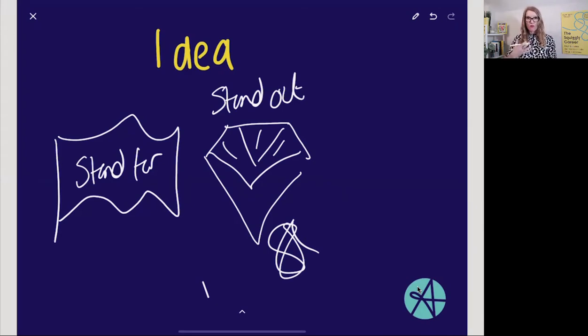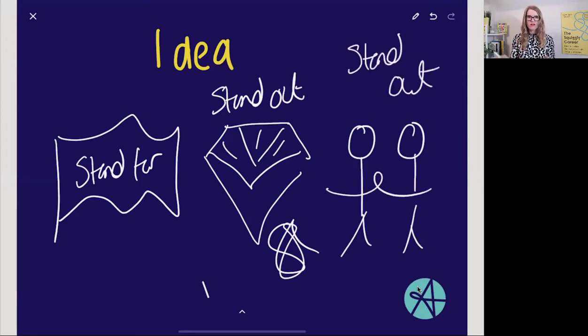And then the third thing when you're really shaping your idea is just to think about who are you going to stand with. Because we increase our impact when we work with other people, and there could be other organizations, institutions, individuals that actually you could stand with as a way of really building your idea and getting momentum behind it. So as you're thinking about what's the impact that you want to make, just make sure you're reflecting on what do I stand for, how do I stand out, and who am I going to stand with?